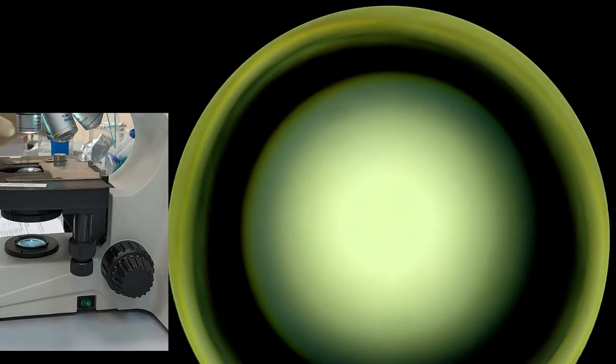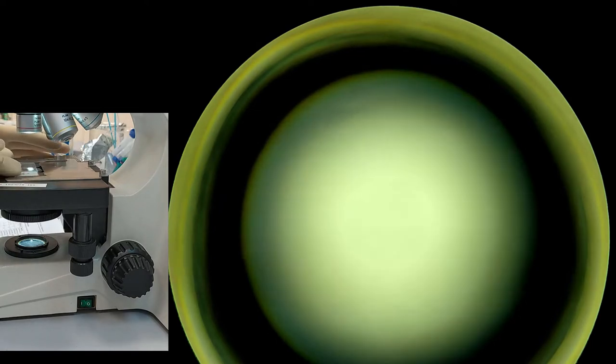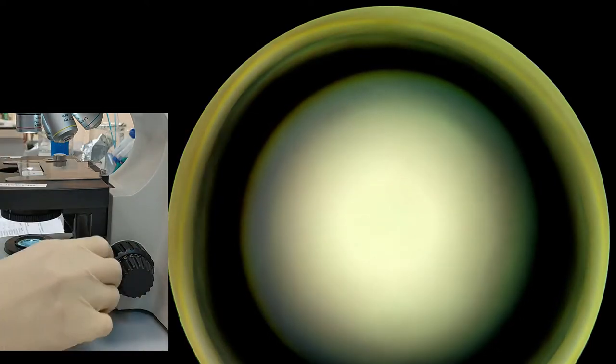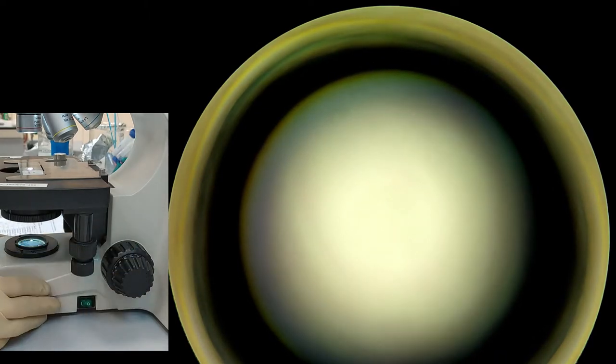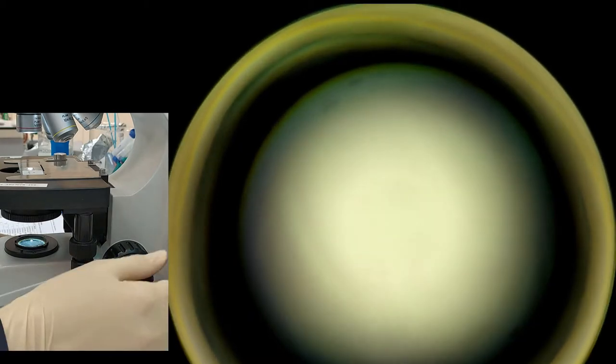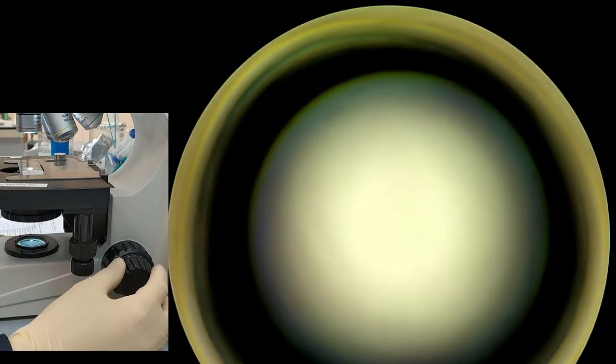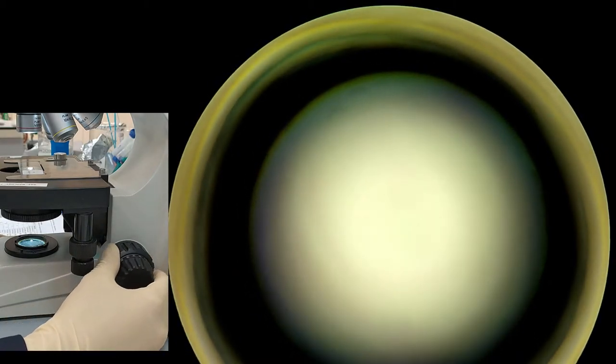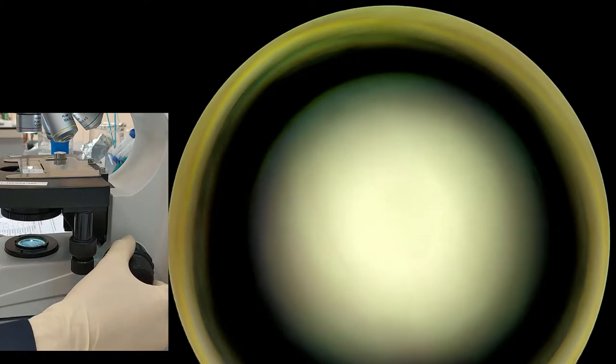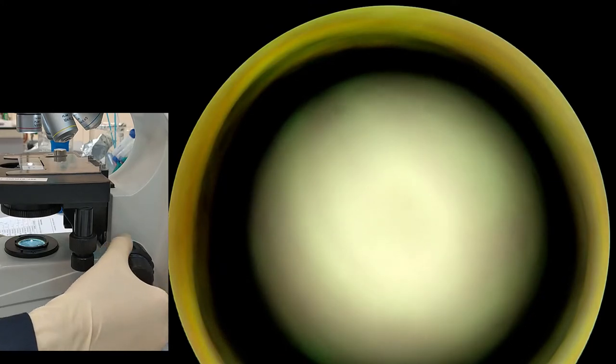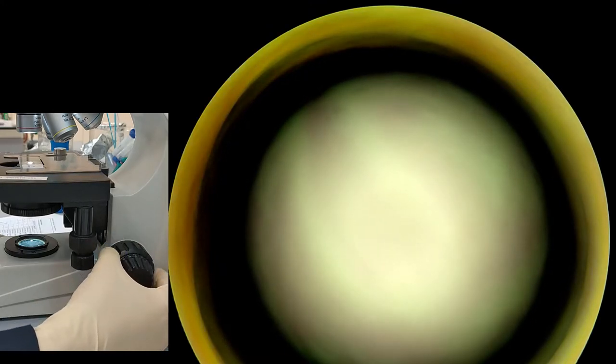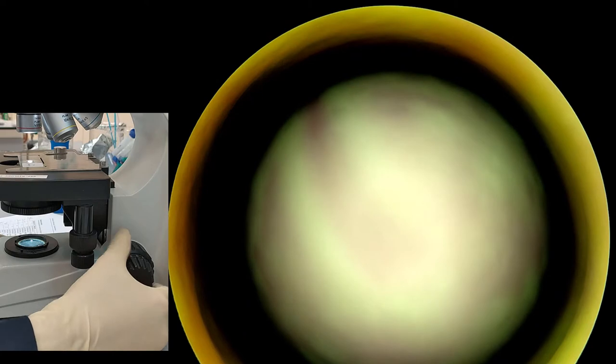Okay, so we always start with the smallest 4x objective. Place your sample here, roughly center the view, and then start with the knob so that you can see it more or less detailed in your view of the camera.